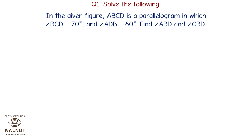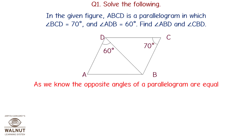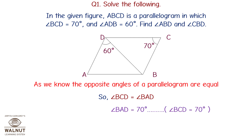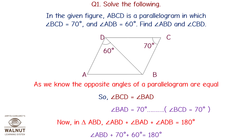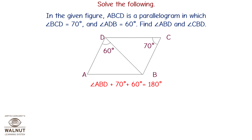In the given figure, ABCD is a parallelogram where angle BCD equals 70 degrees and angle ADB equals 60 degrees. Find angle ABD and angle CBD. Since opposite angles of a parallelogram are equal, angle BAD equals angle BCD equals 70 degrees. In triangle ABD, angle ABD plus angle BAD plus angle ADB equals 180 degrees, so angle ABD plus 70 plus 60 equals 180. Therefore, angle ABD equals 180 minus 130, which is 50 degrees.